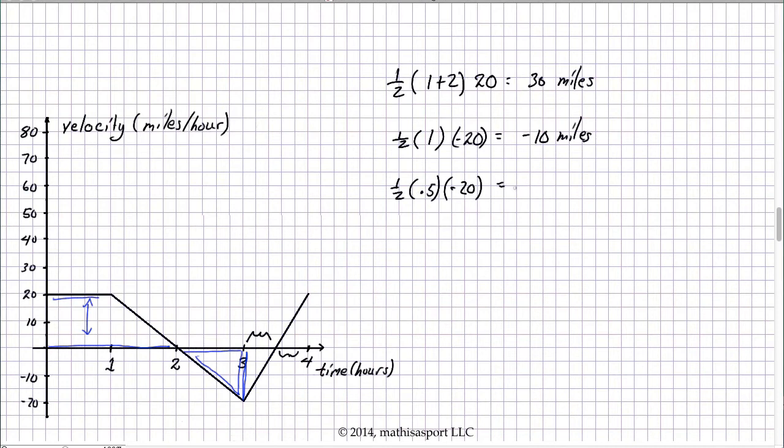And that's going to give us negative 10. Half of that is negative 5. And what have we got finally in this last half hour? This is our triangle. Again, one half base times. Base is 0.5, one half base times height. Again, that was a negative. And what's the height now? The height is positive 20. So, that's going to give me positive 5 miles.